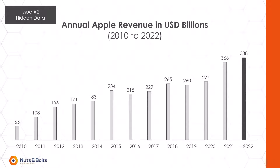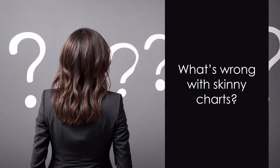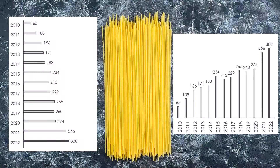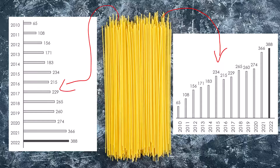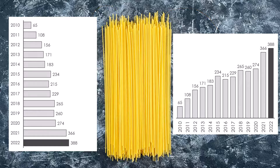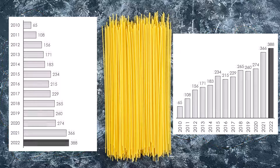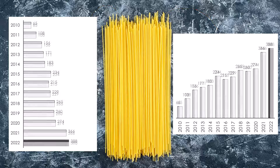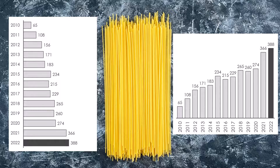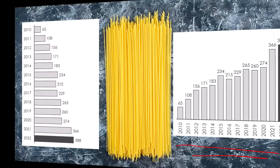Before I show you how to fix both of these issues, you might be wondering what's wrong with skinny charts in the first place. Skinny column charts and skinny bar charts simply look like pasta noodles that you're presenting with your data, instead of just fattening or thickening them up for larger charts, which look much better for your dashboards, your client deliverables, et cetera. These are the skinny charts; these are the fattened up charts. So let's look at how to fix them.